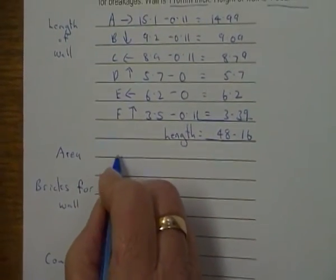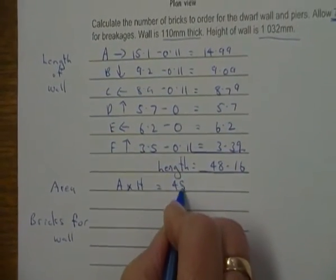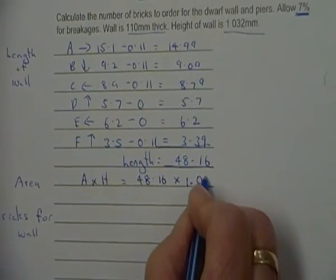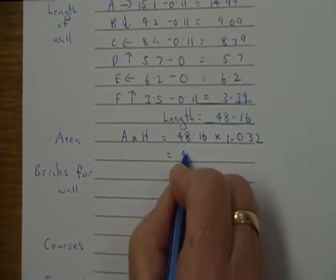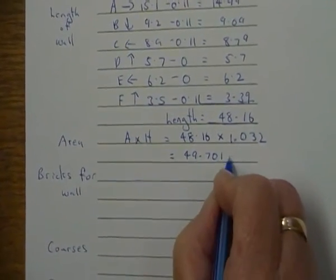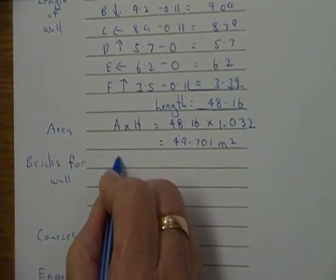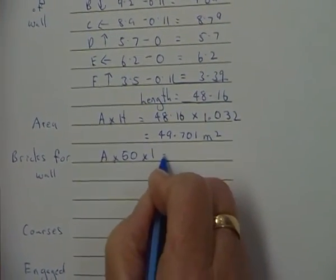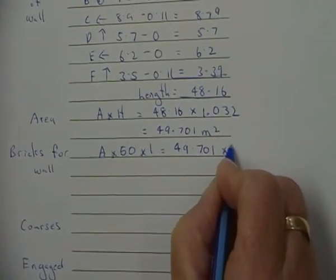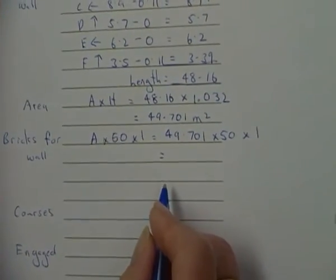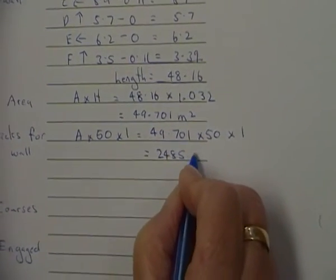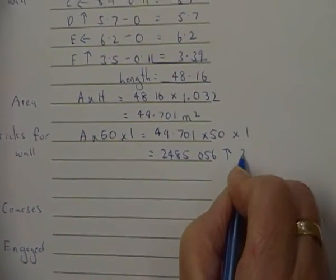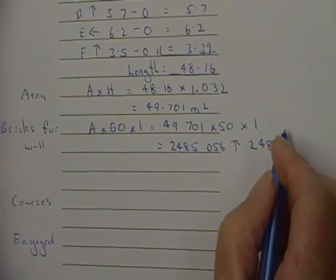So my area now is, area is times the height, so it's going to be 48.16 times my height of my wall, I'm converting 1.032, and then I'm going to get a figure of 49.701 meters squared. Now I bring that down for my bricks because it's area times 50 times 1, so it's going to be 49.701 times 50 times 1, and that will give me an answer of 2485.056. I'm going to round up and make that 2,486 bricks.